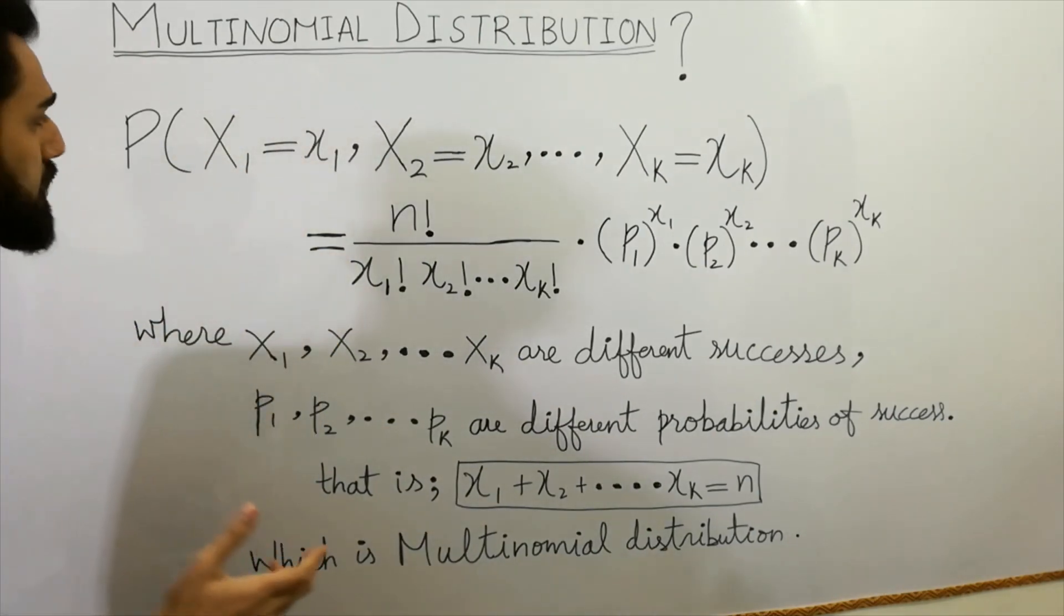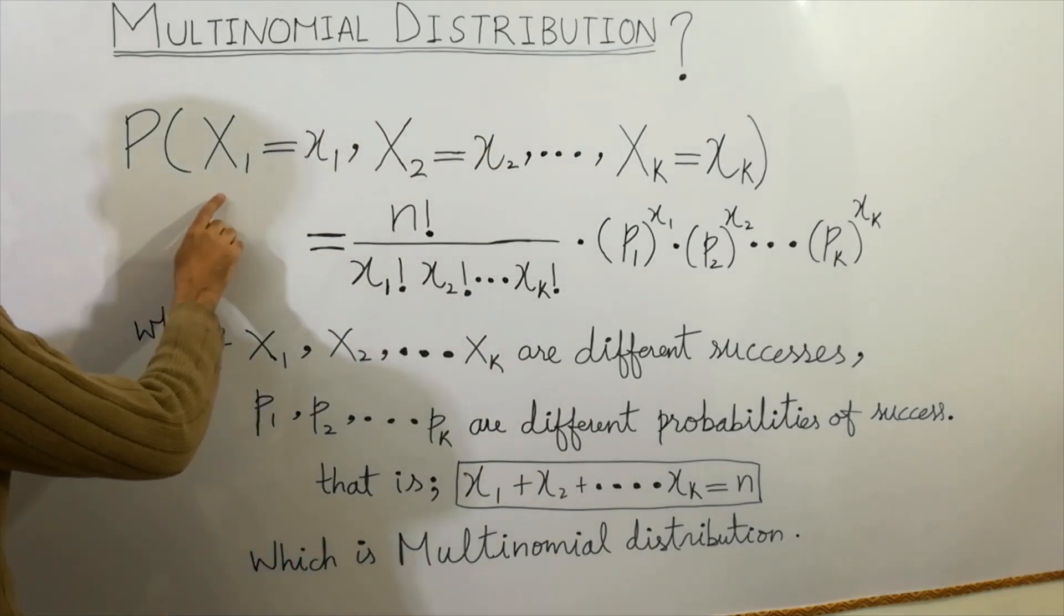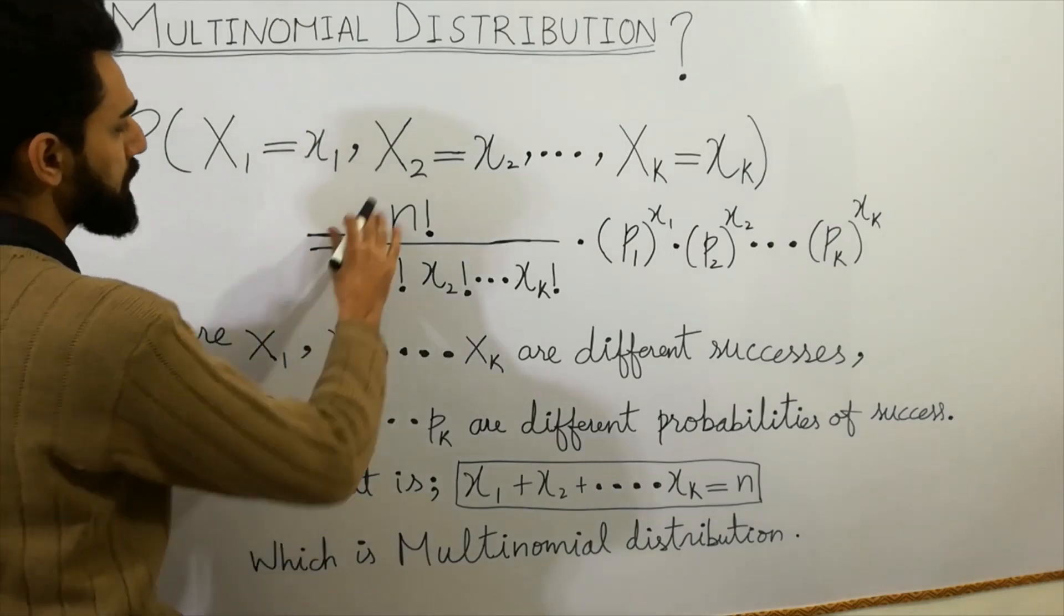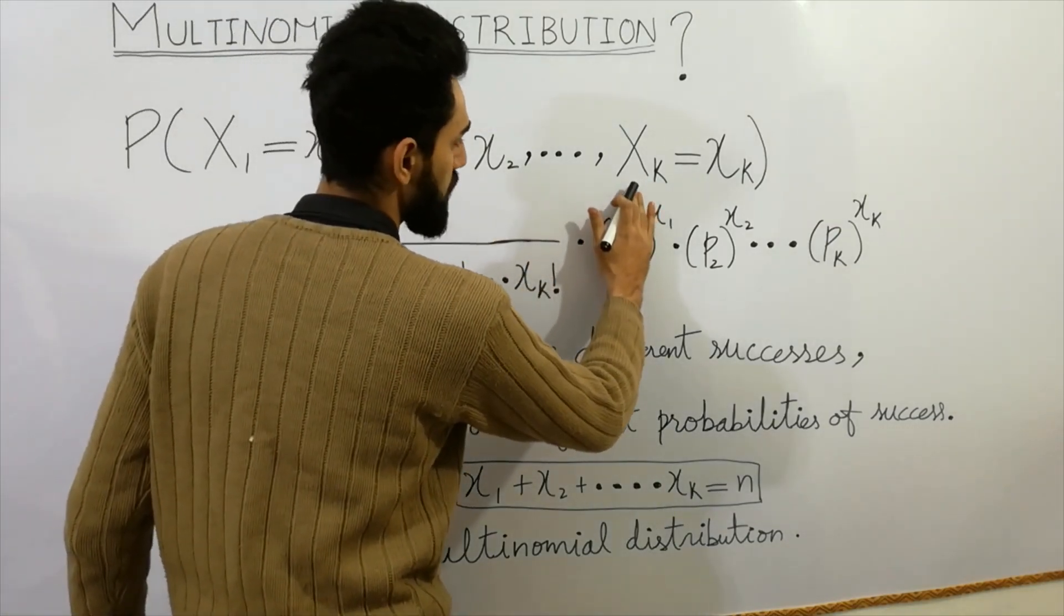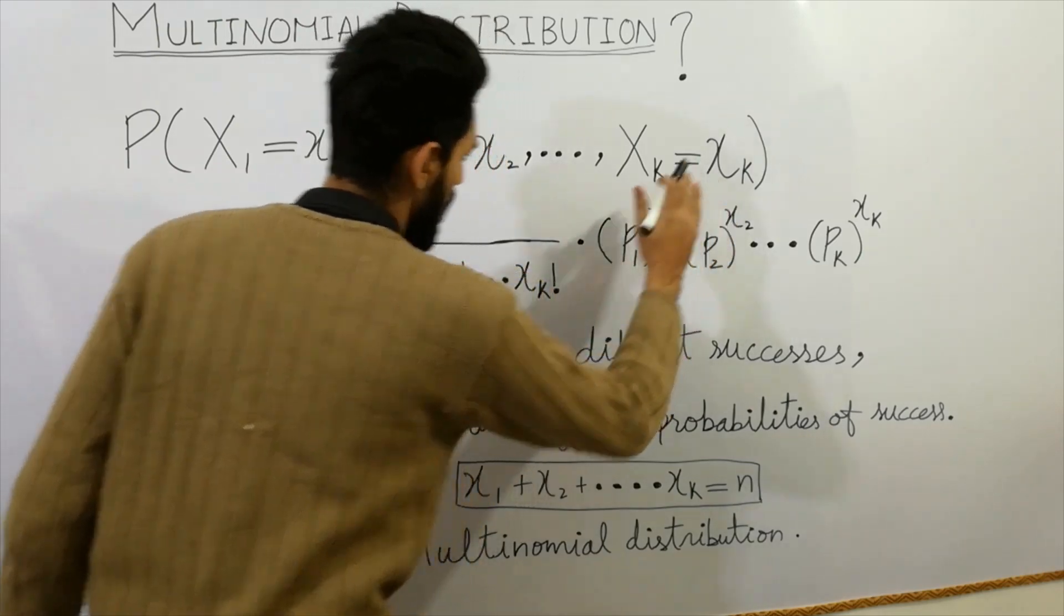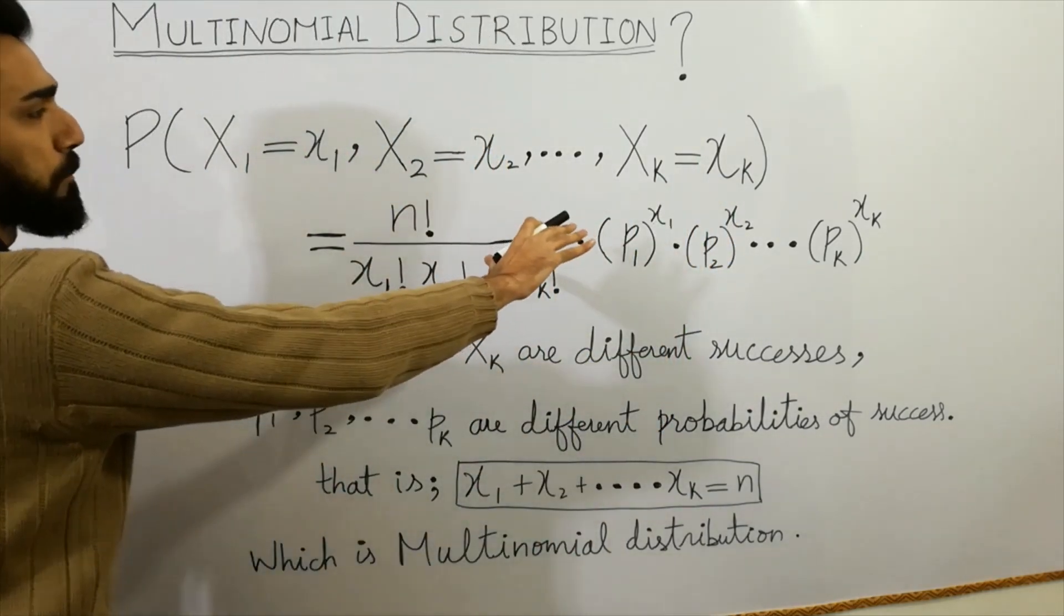So here the formula is the formula of multinomial distribution given here: probability of capital X1 equals small x1, capital X2 equals small x2, up to so on capital Xk equals small xk. You can say that which has different probabilities is called as multinomial distribution.